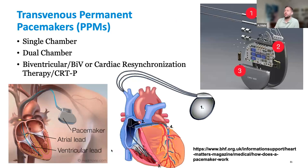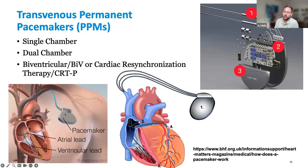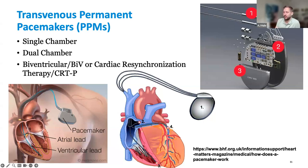Transvenous permanent pacemakers — you may see them as PPMs. We have single chamber devices; imagine the displayed dual chamber with one less lead. This is a dual chamber shown here: for the dual, you have one lead in the atrium and one in the ventricle. This one looks pretty close to the apex, which is standard for transvenous placement.